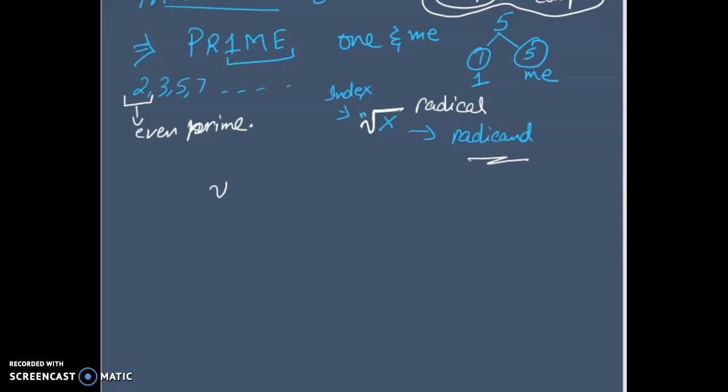The number that is inside the symbol is called radicand and this tiny number is called index. But you might say, okay, I can't find any symbol here. Nothing is written. There is no n right here. When nothing is written, it is always assumed that they are asking for a square root, that means the second root.